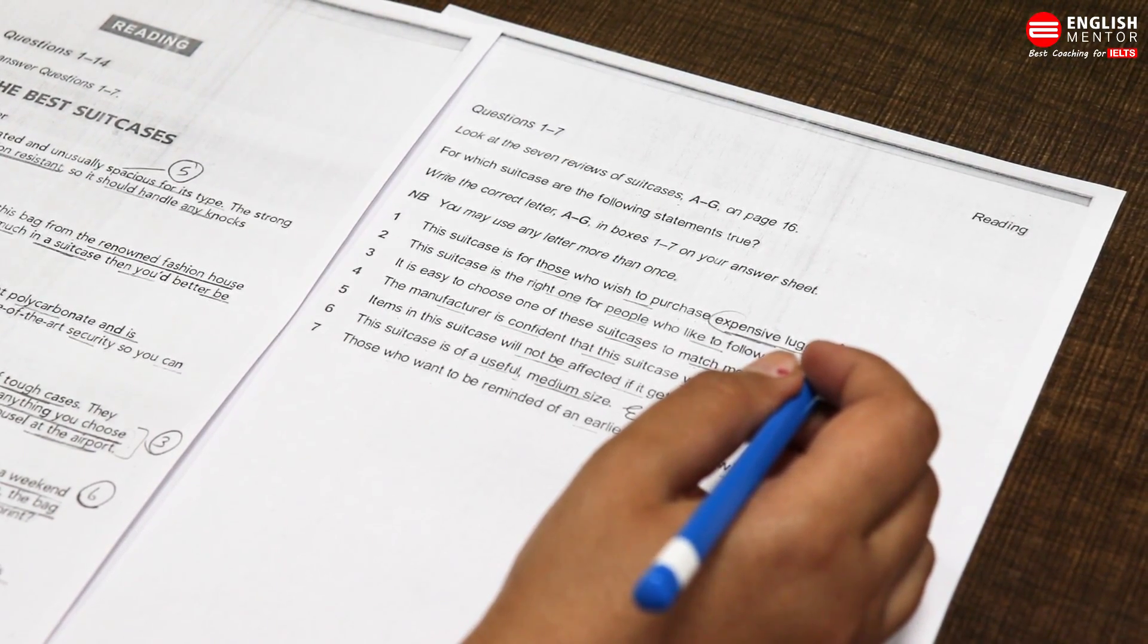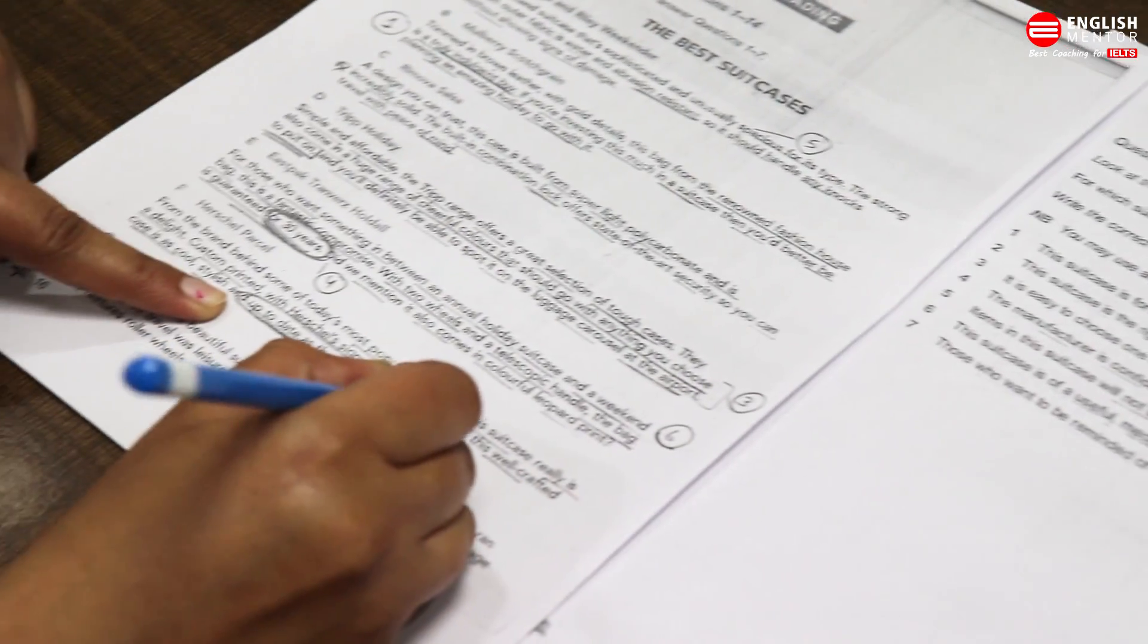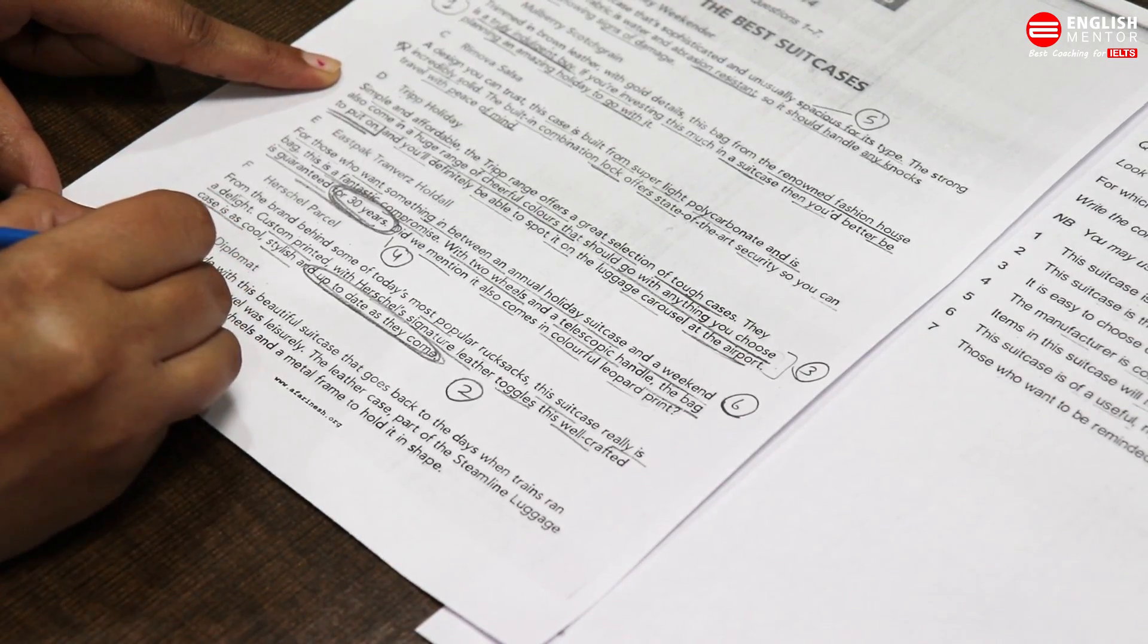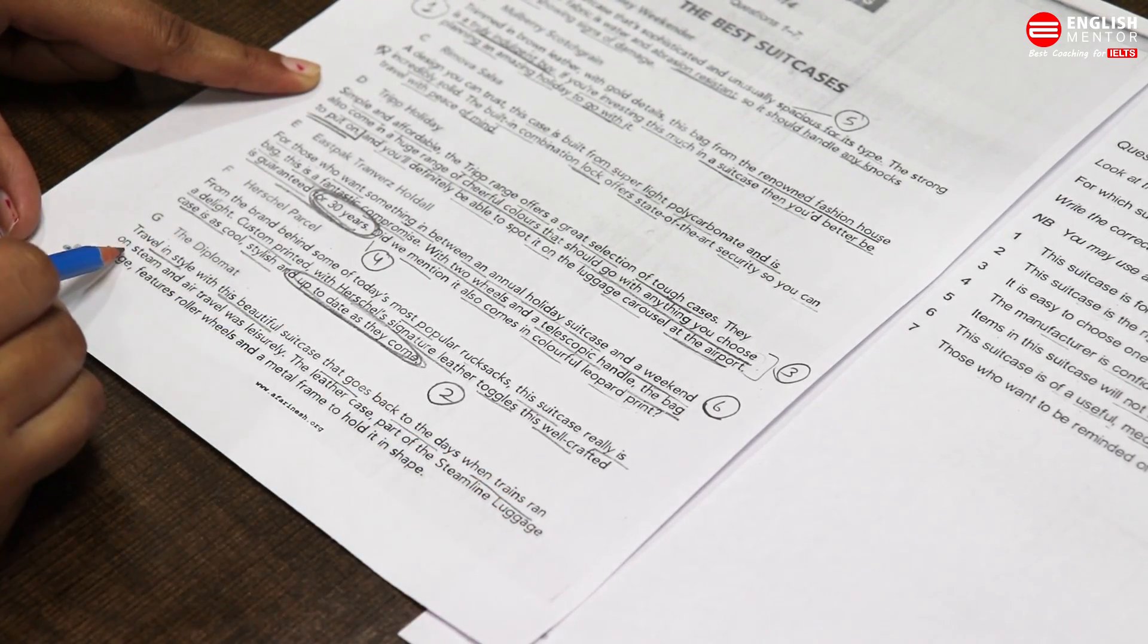Up-to-date means latest, trendy. Here we're talking about following the latest fashion. Latest fashion, trendy, up-to-date are similar - these are synonyms used to replace it. For question number two, I will mark my answer F. Question two is beautifully solved.